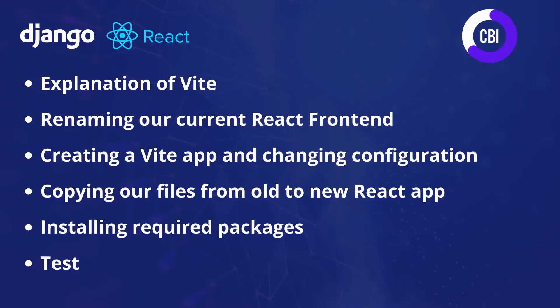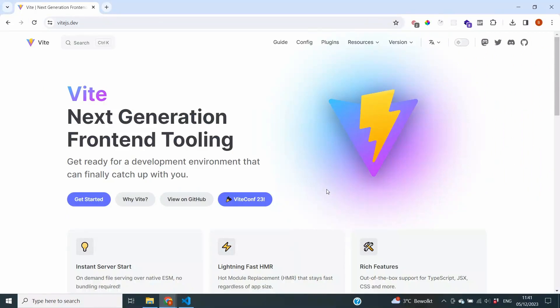To realize this migration we're going to be following six steps. First I'll start on the Vite documentation and show you why this is the best choice for us right now. Next we'll go to our current frontend and rename it. Following that we'll create a Vite app using the commands in the documentation and make a small configuration change. Then we'll copy all of the files from our old application to our new React application, install the required packages, and test that everything works as expected.